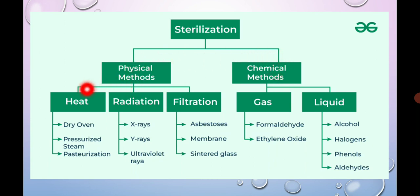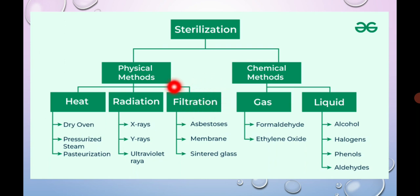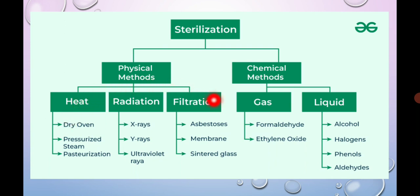Under the physical method, it is further subdivided into three major types: heat-based, radiation-based, and filtration-based. Always remember that the same type of sample cannot be sterilized by all different methods. Based on the type and quality of the sample and its exposure to the technique, a particular method is adopted. For example, if the material is an enzyme or hormone, we cannot employ heat sterilization, as heat will destroy enzymes and hormones. A non-harming method must be adopted instead.